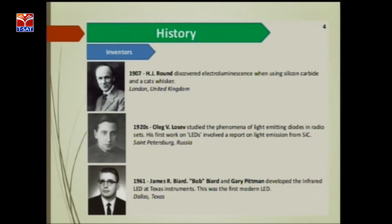Lot of scientists researched to provide the best LED for our welfare, sacrificing their whole lives. For example, in the year of 1907, H.J. Round discovered electroluminescence when using silicon carbide and the cat's whisker. He was a London scientist from the United Kingdom. You may see his photo in the picture. Electroluminescence is a phenomenon where free electrons are combined with holes to form energy.